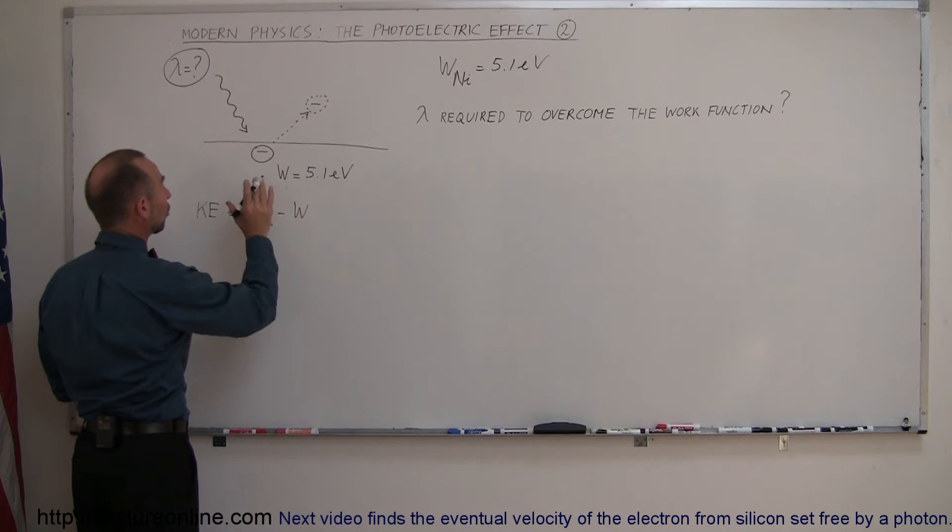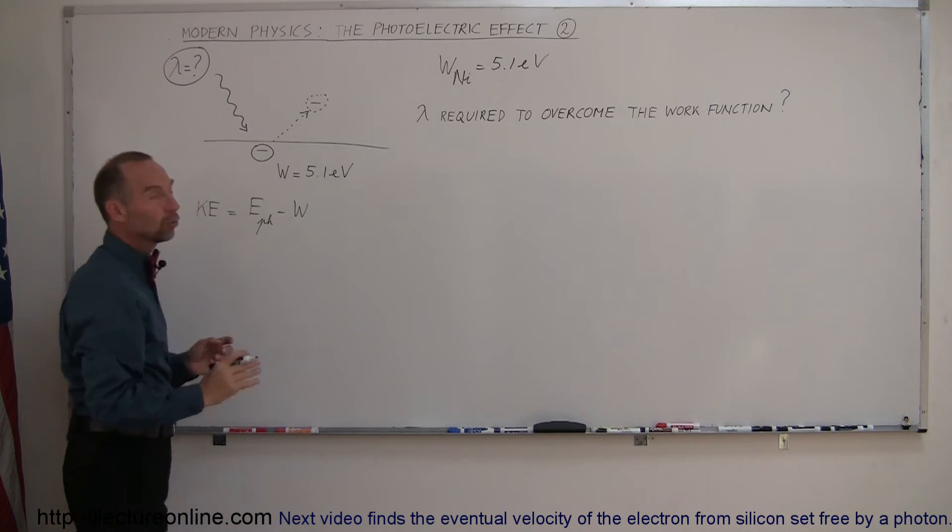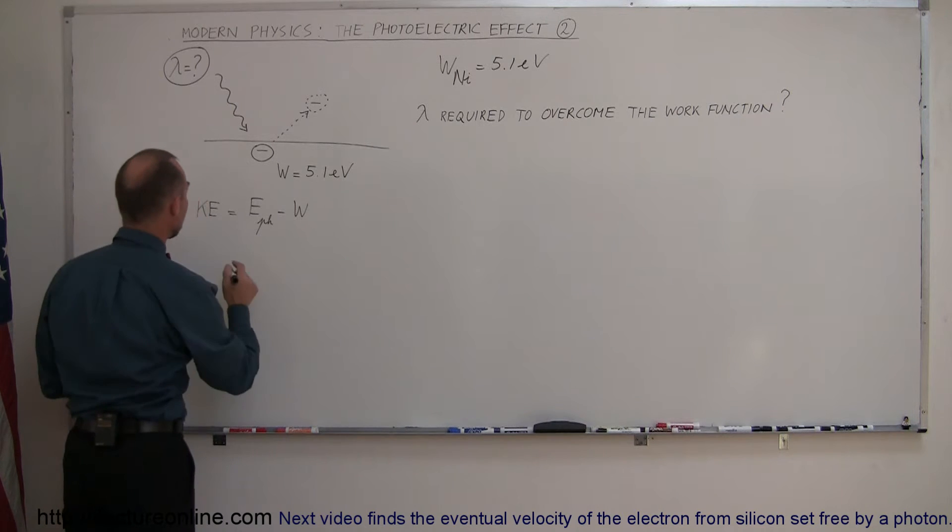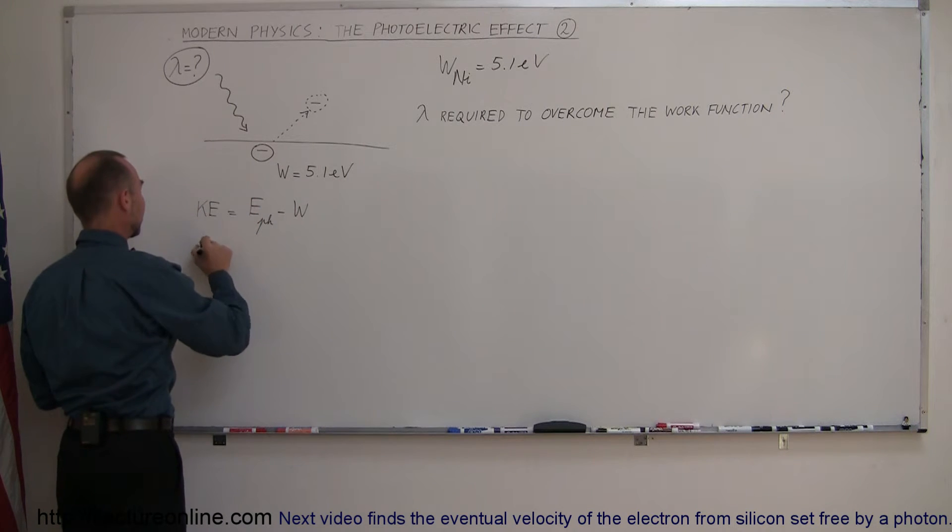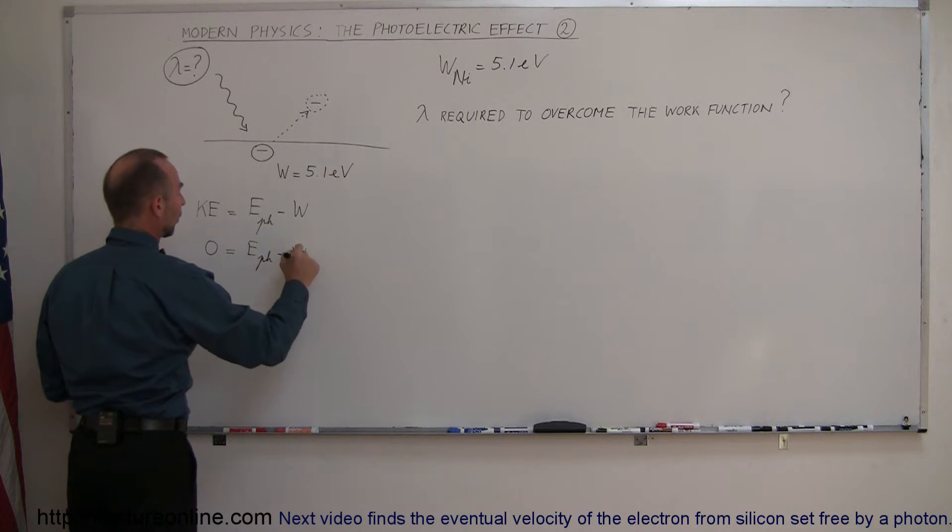And in the case where we just want barely enough to overcome the work function and zero energy is given to the electron for it to fly away, we just simply set kinetic energy equal to zero, that's equal to the energy of the photon minus the work function.